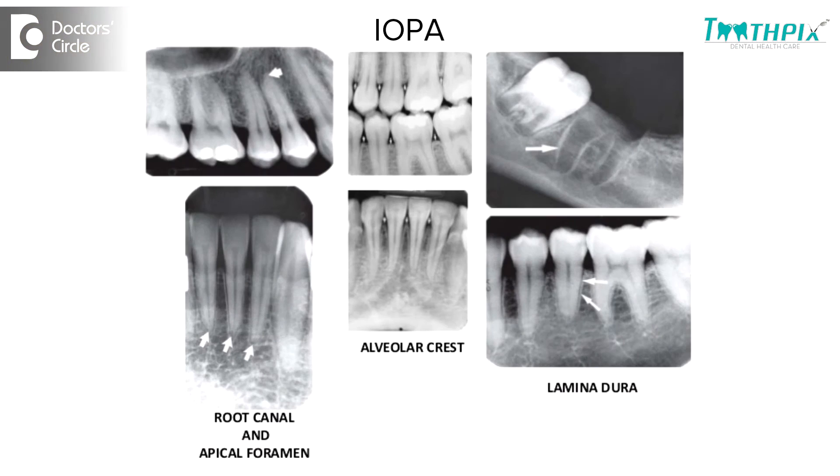An IOPA is a smaller x-ray — probably a lot of people would have seen that in a clinic setup. This is taken for treatments like root canal treatment or to identify anything that is within the tip of the root, like an abscess or maybe a cyst around the tip of the tooth, which we call periradicular lesions or periapical lesions.